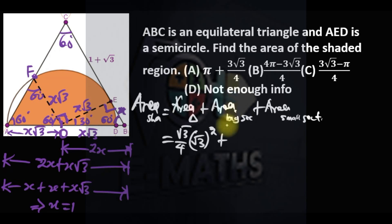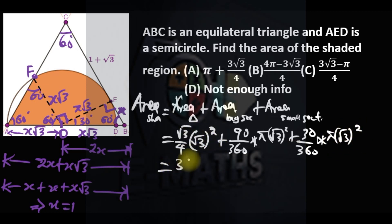That's the special formula for area of an equilateral triangle: root 3 over 4 times side squared. Plus the area of the big sector is 90 over 360 times pi r squared, where r is root 3, so 3. The small sector is 30 over 360 times pi root 3 squared.